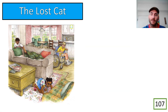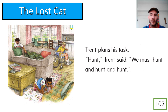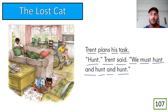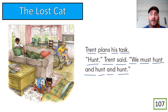Let's go to page 107. You guys are reading so nicely, so continue the same way — you read first, then we read together. Super, beautiful! Now we can all read together starting with the word Trent — Trent plans his task hunt. Trent said, we must hunt and hunt and hunt. In this story, 'hunt' means 'look for.' So they are hunting for Muff the cat so they can bring her home.